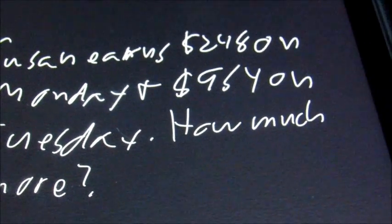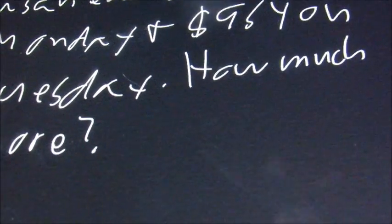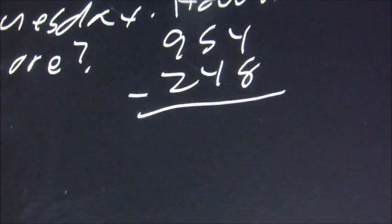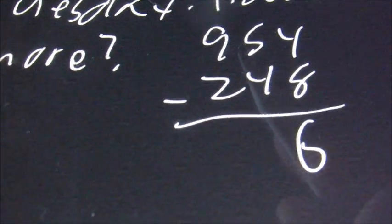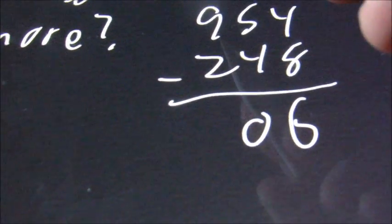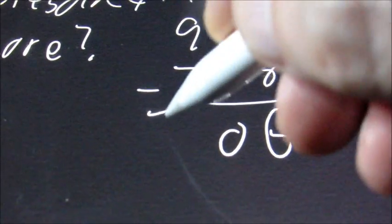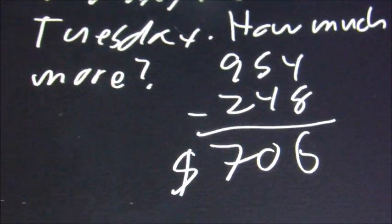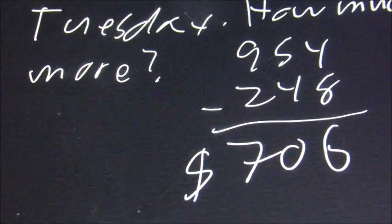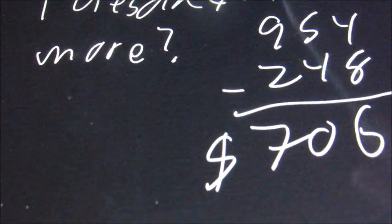So here's just going to be a subtraction. We're going to say 954 minus 248. 14 minus 8 is 6, 4 minus 4 is 0, and 9 minus 2 is 7. So she earned $706 more on Tuesday than she did on Monday.